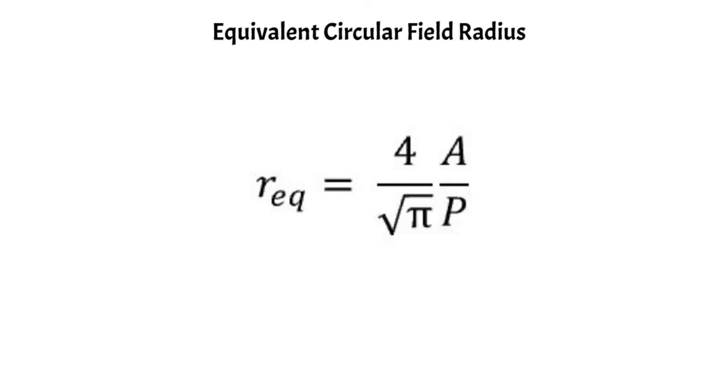There might be some instances where you want a circular field instead of a square field, in which case you would want to use this formalism instead of the equivalent square. Both formalisms are based on the area divided by perimeter ratio, and so both will take into account the area of your field and also the perimeter of your field.